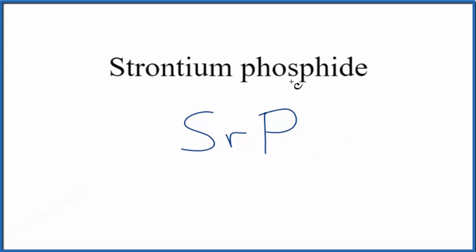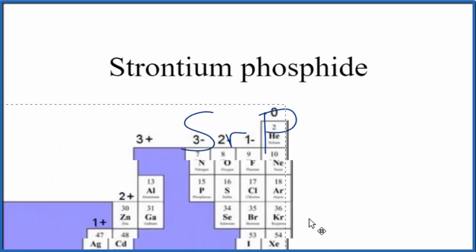Now that we've got the element symbols for Strontium Phosphide, we need to look up the charges. Strontium, that's a metal, phosphorus is a non-metal. So this is an ionic compound, and we should look at the charges, make sure they add up to zero. So let's look at the periodic table.